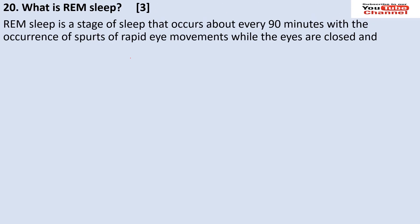Number twenty: what is REM sleep? REM stands for Rapid Eye Movement. It is a stage of sleep that occurs about every 90 minutes, characterized by spurts of rapid eye movements while the eyes are closed.